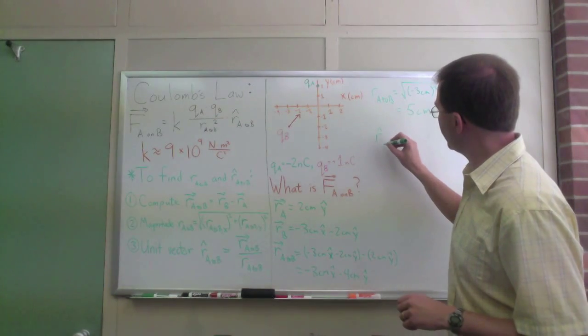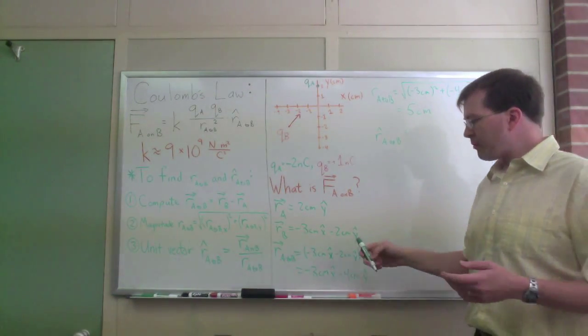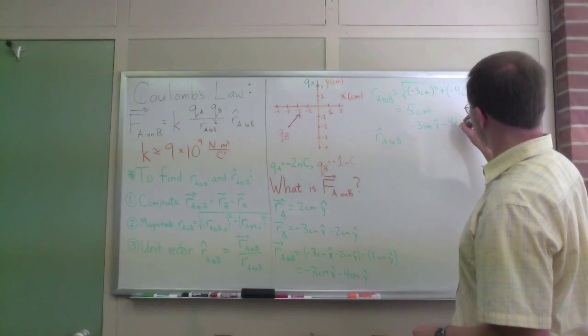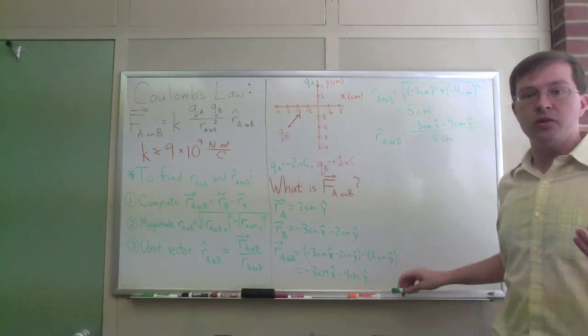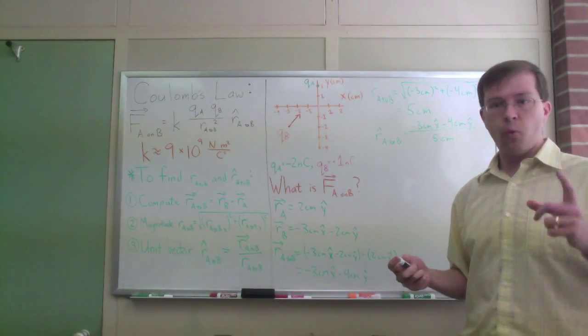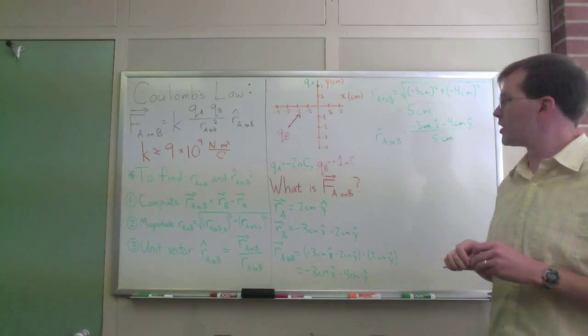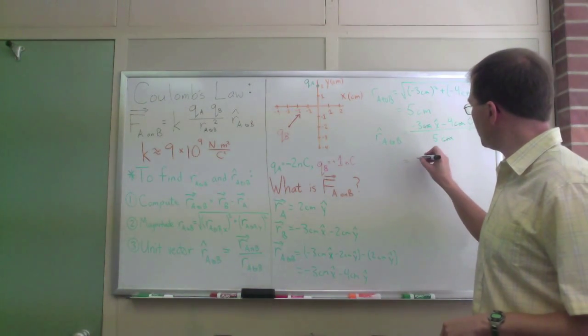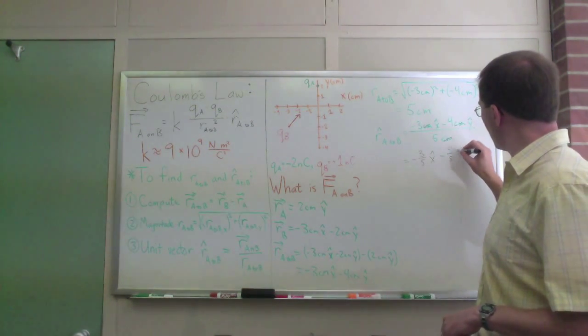Finally, r hat from A to B is just dividing those two by one another. Remember what that does. I take this minus 3 centimeters x-hat minus 4 centimeters y-hat. I divide by 5 centimeters. The beauty of this is that as with any unit vector, the units cancel out. Okay, bad name. Unit vector, remember, comes from unit, meaning unity, one. It has magnitude one and it has no dimensions, no units. So you can see the units cancel out in that equation. And then this is just, once I cancel that out, I'll summarize. This is equal to minus 3 fifths x-hat minus 4 fifths y-hat.